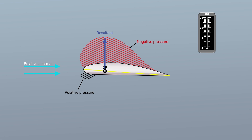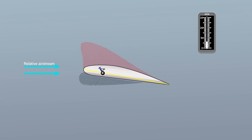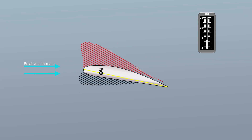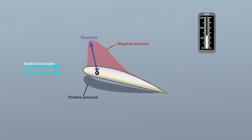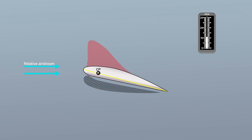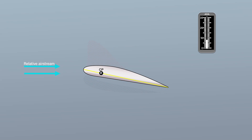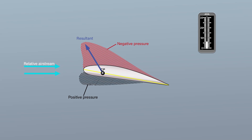As previously seen, the distribution of pressure forces over the airfoil varies with the AOA, and the application of the resultant force, or center of pressure, varies correspondingly. As the angle increases, the CP moves forward; as the angle decreases, the CP moves back. This unstable travel of the CP is characteristic of almost all airfoils.